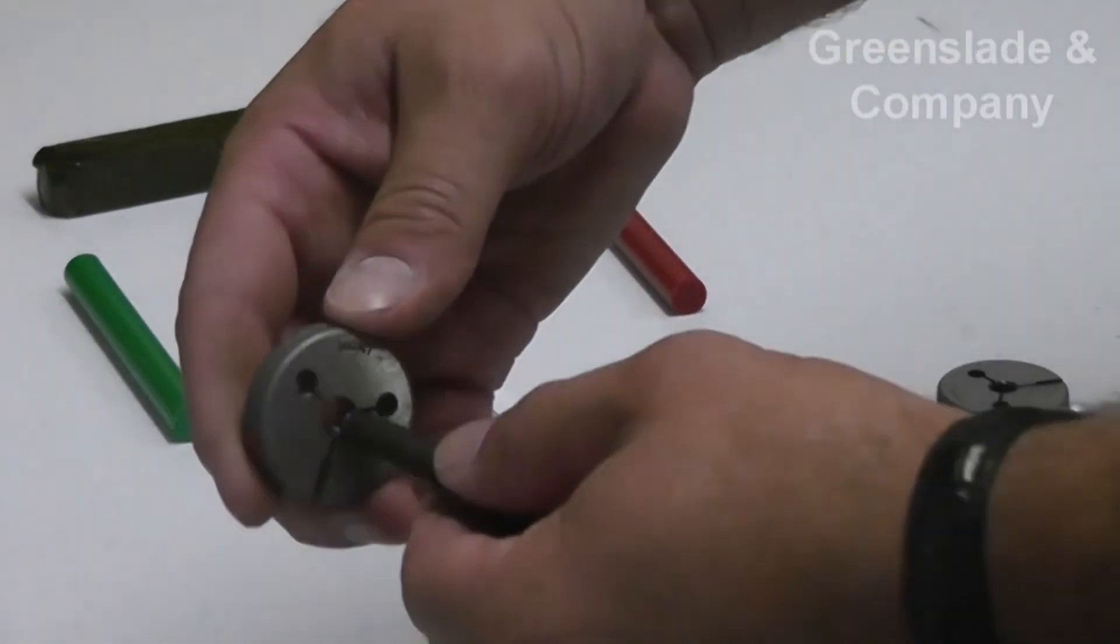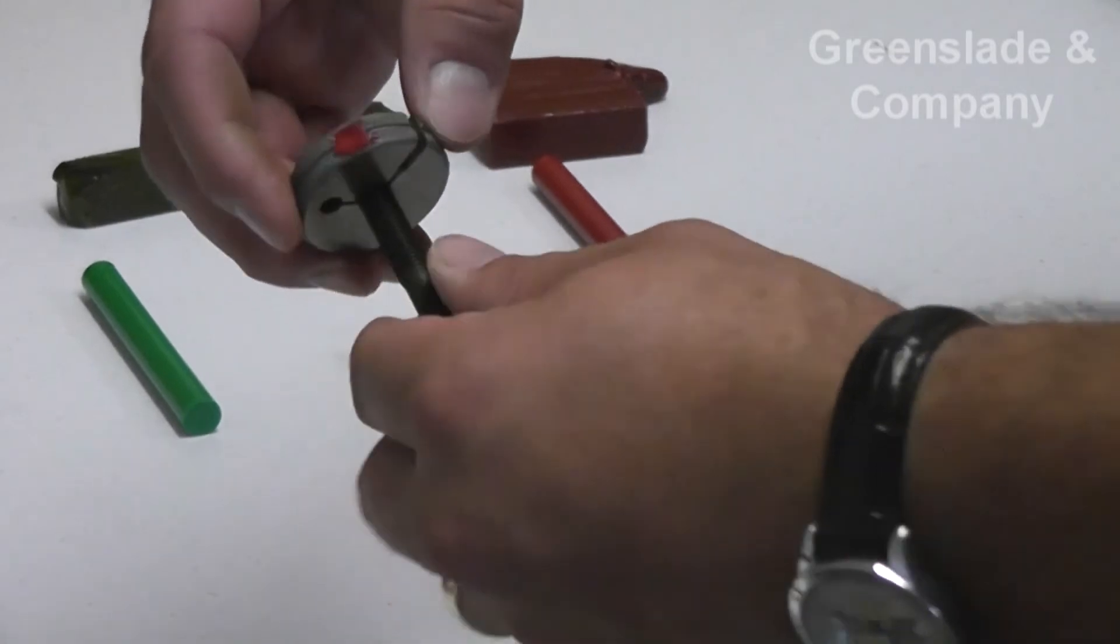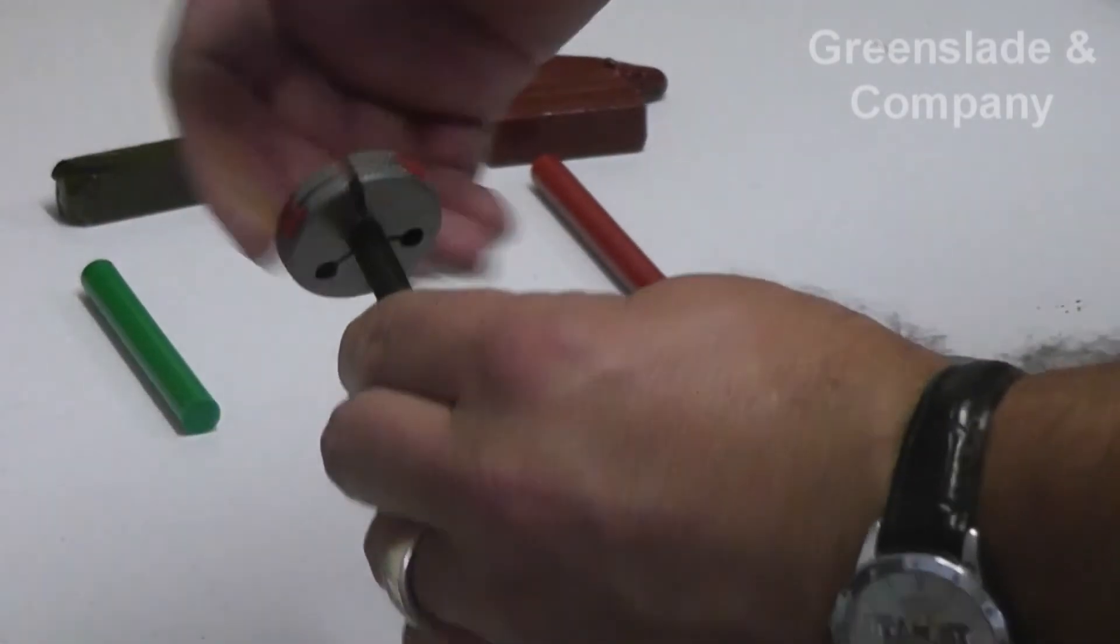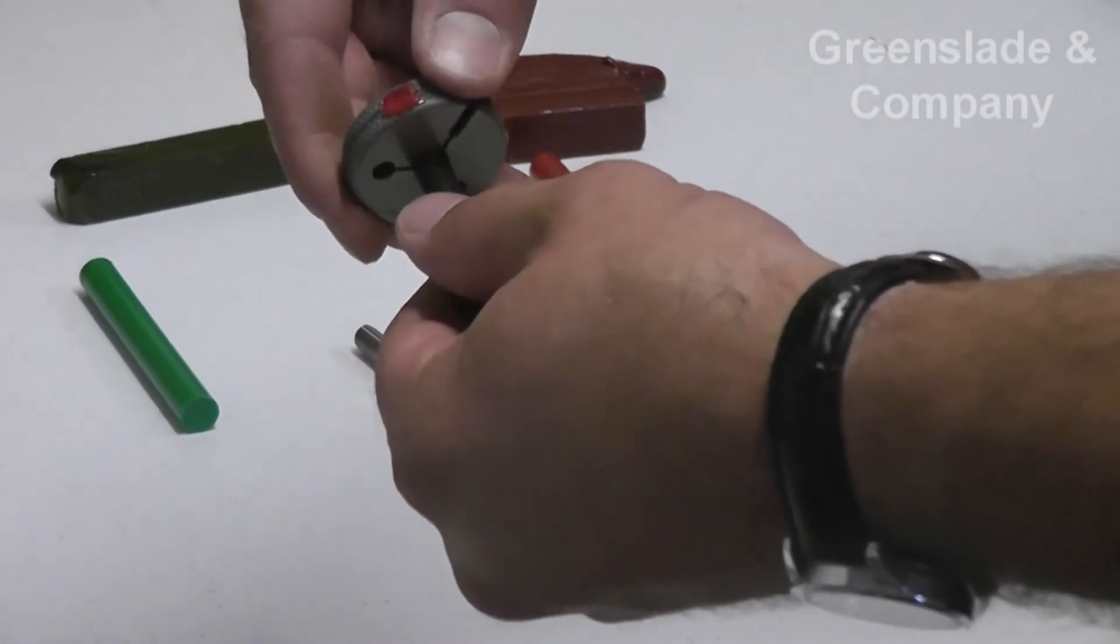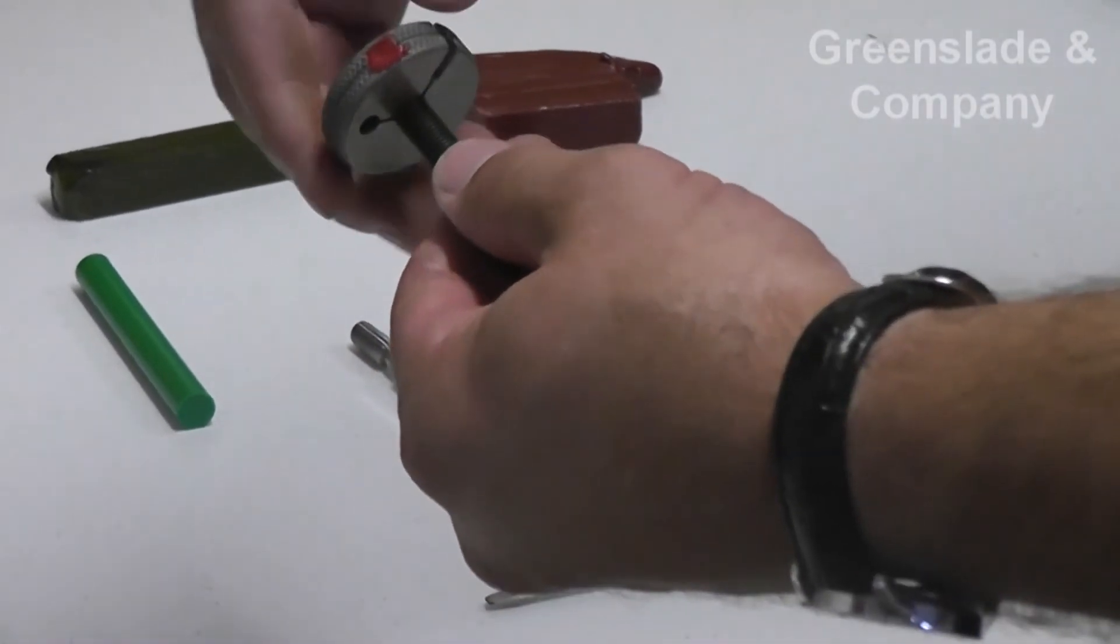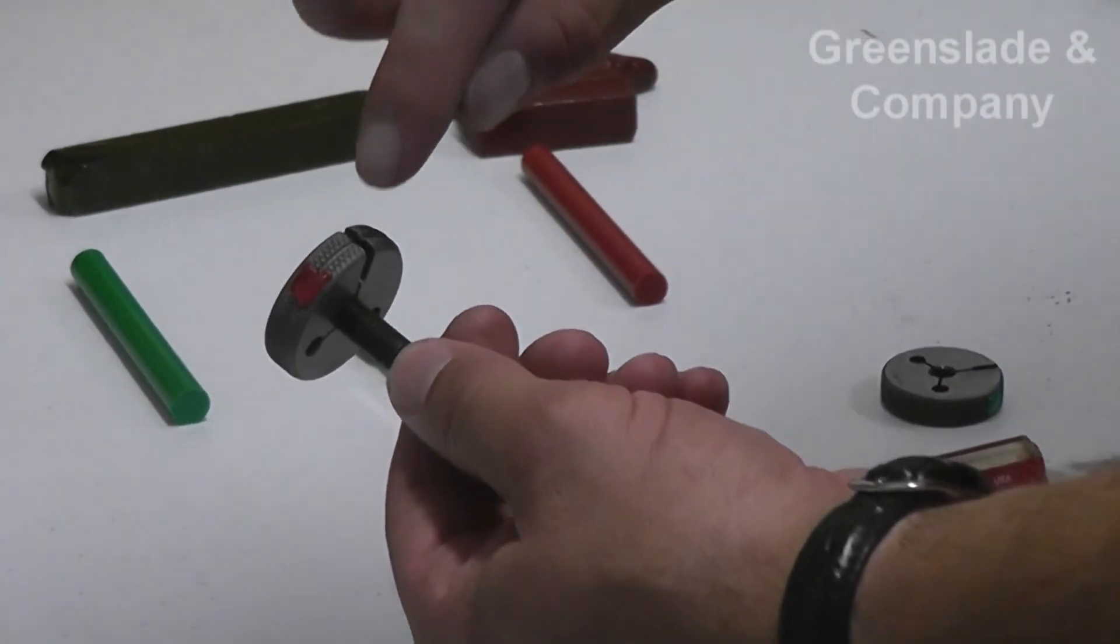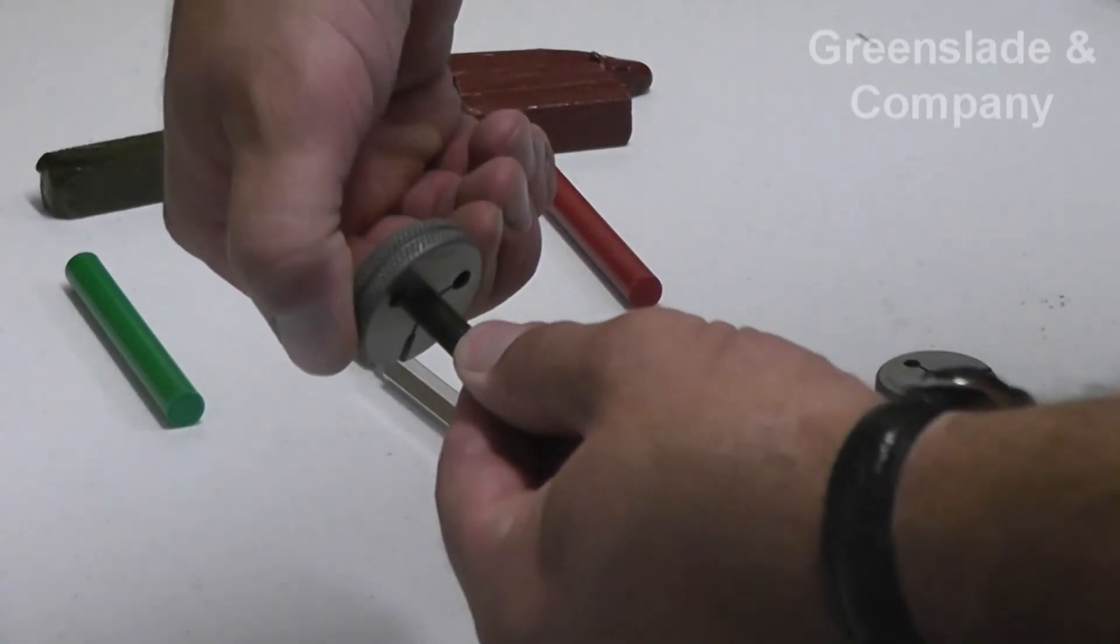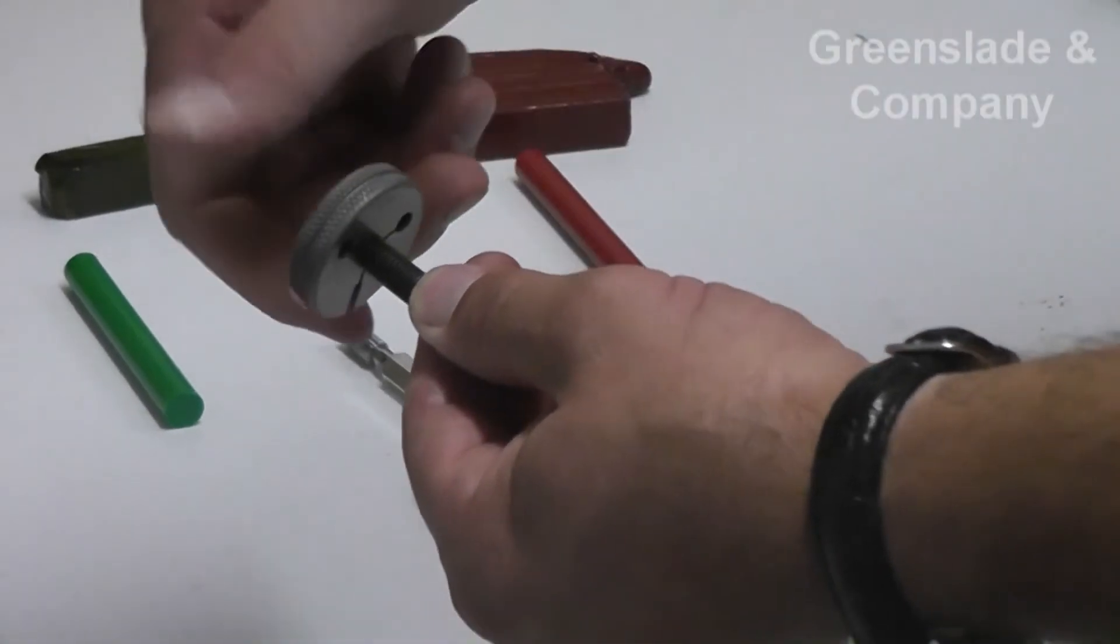Your no-go ring gauge rules state that it can't go on any more than three complete turns. This one stops right away, so we don't even have to count turns. But typically what you do is get your thread engaged if it's close and pick a reference point, say this split to where my thumb is, and rotate around. This one's only about a half a turn, so we're way good on these threads.